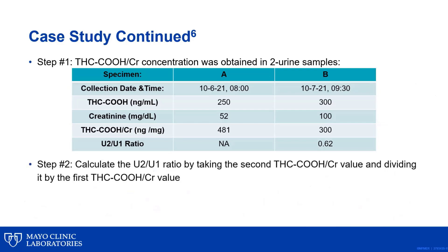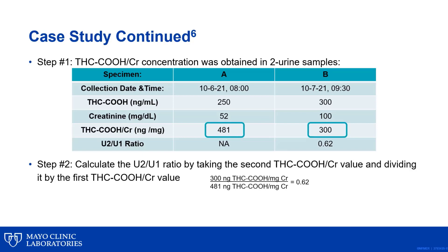Step two is to then calculate the decision ratio by taking the second creatinine normalized carboxy THC, or U2, and dividing it by the first creatinine normalized carboxy THC, or U1. In this example, you would take the 300 nanograms of carboxy THC per milligram of creatinine and divide it by the 481 nanograms of carboxy THC per milligram of creatinine to get a decision ratio of 0.62.